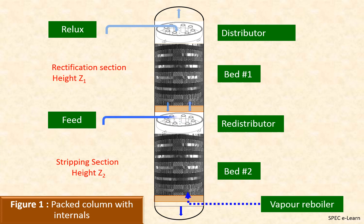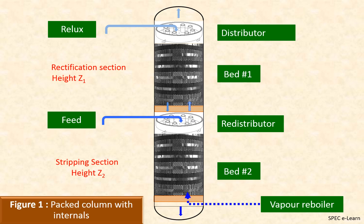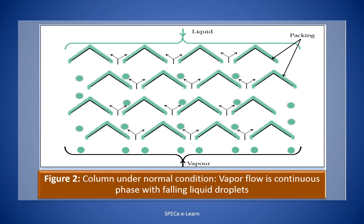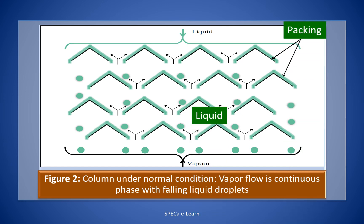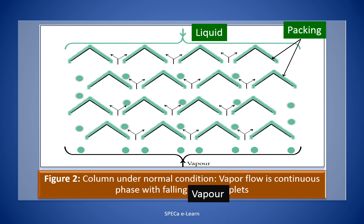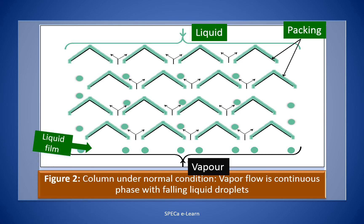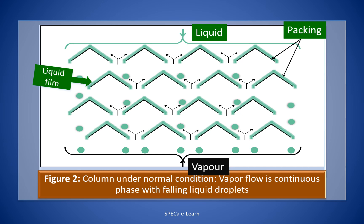Both beds are supported on packing support which is fixed to the column. This figure illustrates a packing layer of structured packing and how it provides the contact surface for the liquid and vapor. Liquid stream is shown in green color and the vapor stream is shown in black color. The liquid is distributed as a thin film spreading over the surface of the packing where it comes in contact with the vapor flowing up as a continuous phase.